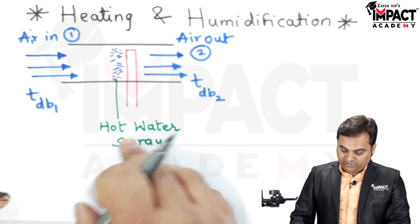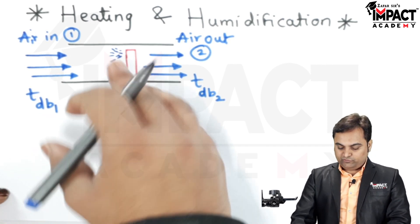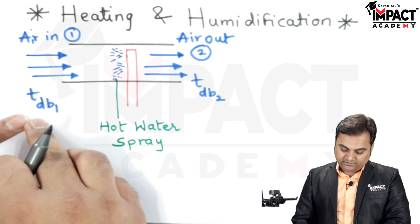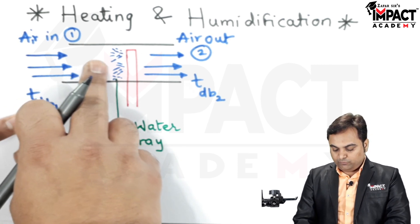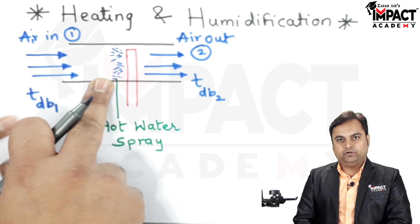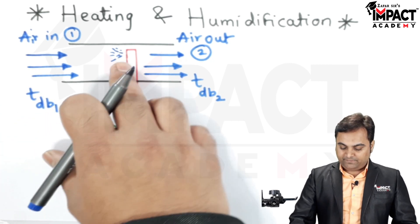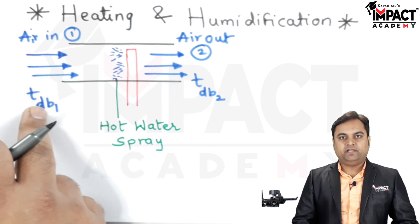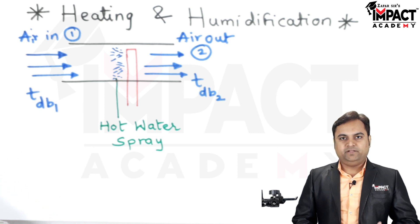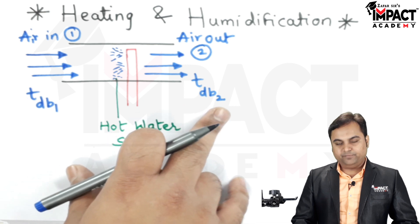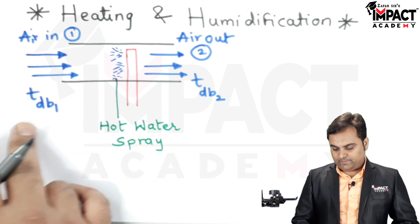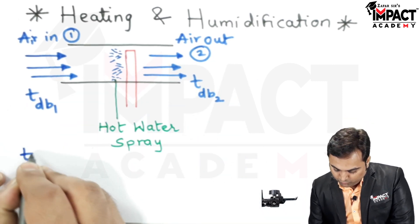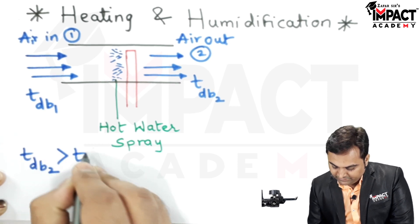In heating and humidification, hot water is sprayed and air enters simultaneously. The incoming air at dry bulb temperature tdb1 is heated by the hot spray water, and at the same time the water evaporates and mixes with the incoming air, increasing its moisture content. The air finally leaves at temperature tdb2, which is higher than tdb1, so tdb2 is greater than tdb1.